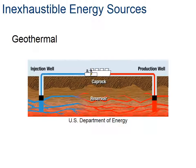Geothermal energy is another inexhaustible source. This example from the U.S. Department of Energy shows a hot geothermal system, generally available west of the Rocky Mountains where the Earth's crust is pretty thin. They drill about a kilometer deep, pump cold water in one side, and extract hot water or steam from the other side. That steam turns a turbine to turn a generator to create electricity. East of the Rockies we don't see these as much because the Earth is a lot thicker - though some heat pumps are used to heat homes. Iceland gets a tremendous amount of its energy through geothermal means.